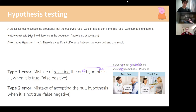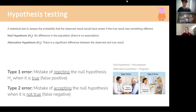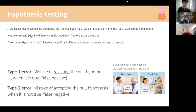There are two types of errors. A Type 1 error is a false positive — you reject the null hypothesis when it is actually true. A Type 2 error is a false negative — you accept the null hypothesis when it is actually false. A diagram is often used in exams to visualize this.